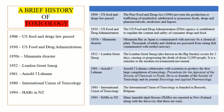In 1961, Arnold J. Lehmann collaborated with other scientists to produce the first large compilation in toxicology, entitled Procedures for the Appraisal of the Toxicity of Chemicals in Food. He was also a co-founder of the Society of Toxicology and the Journal of Toxicology and Applied Pharmacology. In the 1980s, the International Union of Toxicology was founded in Brussels, Belgium.